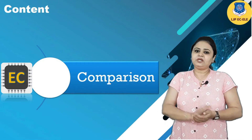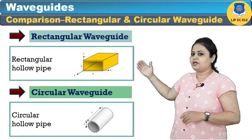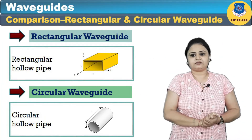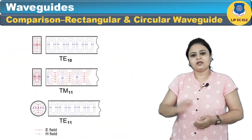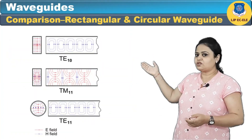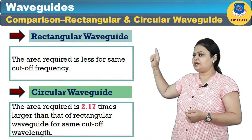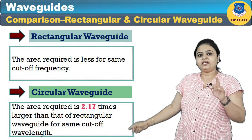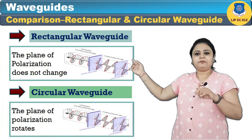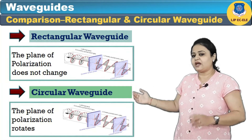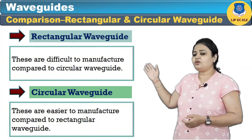Now we will see the comparison between circular waveguide and rectangular waveguide. The rectangular waveguide has a rectangular cross section while the circular waveguide has a circular cross section. The dominant mode in the rectangular waveguide is TE10, whereas in the circular waveguide it is TE11. The area required for the same cutoff frequency is less for the rectangular waveguide, but in the circular waveguide it is 2.17 times larger than the rectangular waveguide. In the rectangular waveguide, the plane of polarization does not change, but in the circular waveguide, as the axes are radial, the plane of polarization rotates as the wave travels through.